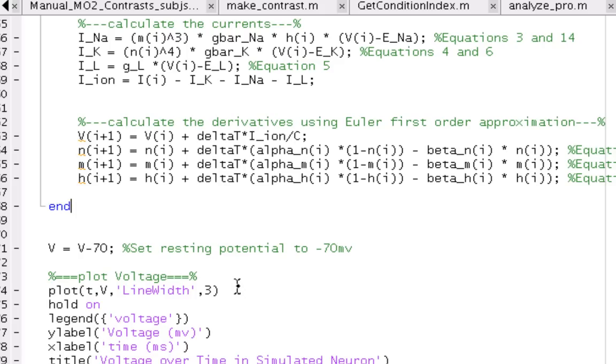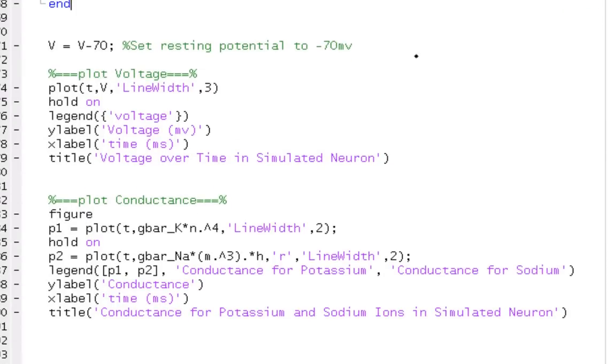Here I've simply set the resting potential to negative 70. Originally it's at zero, but I've changed it so it's more familiar, like what we've seen in textbooks. And these last two blocks are going to actually plot the voltage and also the conductance for different ions.